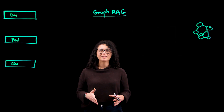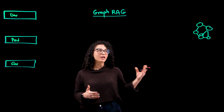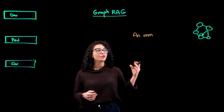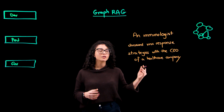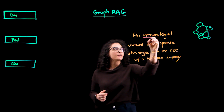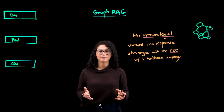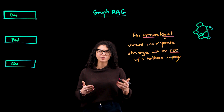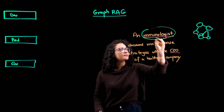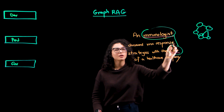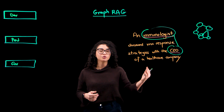Let's consider an example to demonstrate the capabilities of GraphRAG. Suppose we have a sentence like: 'An immunologist discussed virus response strategies with the CEO of a healthcare company.' Traditional text analysis might have detected 'immunologist' and 'CEO' as named entities. However, GraphRAG goes further by identifying and mapping the relationships between these entities, providing a deeper context and insight into their interaction.